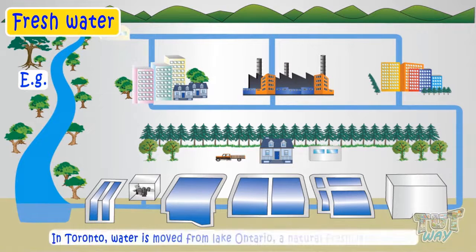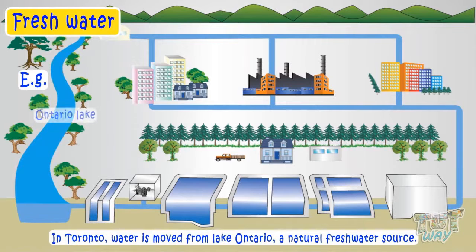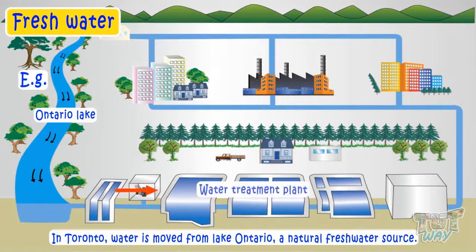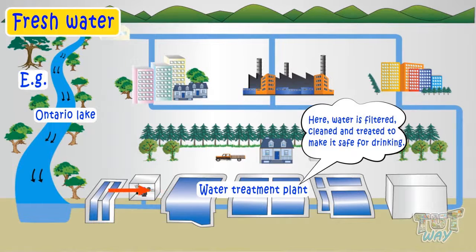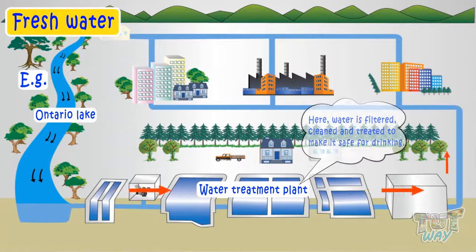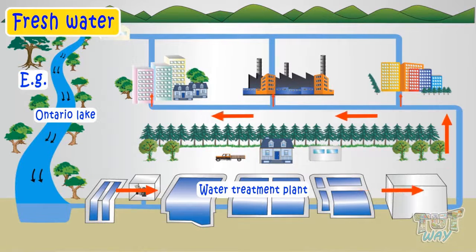For example, in Toronto, water is moved from Lake Ontario, a natural fresh water source, to a human-made water treatment plant where it is filtered, cleaned, and treated so that it is absolutely safe to drink. And then, it is moved to homes, businesses, through water supply systems of pipes and pumps.